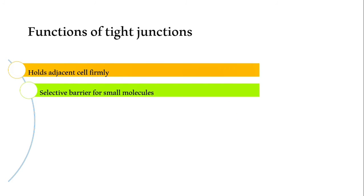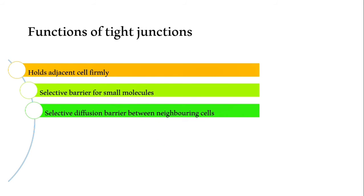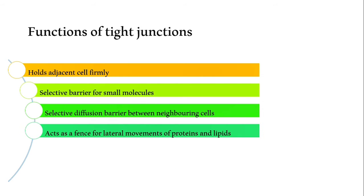So what are the functions of these tight junctions? The function is mainly it holds the adjacent cells firmly to each other thereby providing strength and stability to the tissue. Then it is a selective barrier for small molecules. It allows selective diffusion between the neighboring cells. This is going to act as a fence for movement of proteins and lipids. Large molecules are not allowed to pass through it. Protein and lipid cannot pass through this barrier. Then it helps in maintaining the cell polarity. How? Because of its fencing action. The proteins remain within that particular cell thereby increasing its negativity.